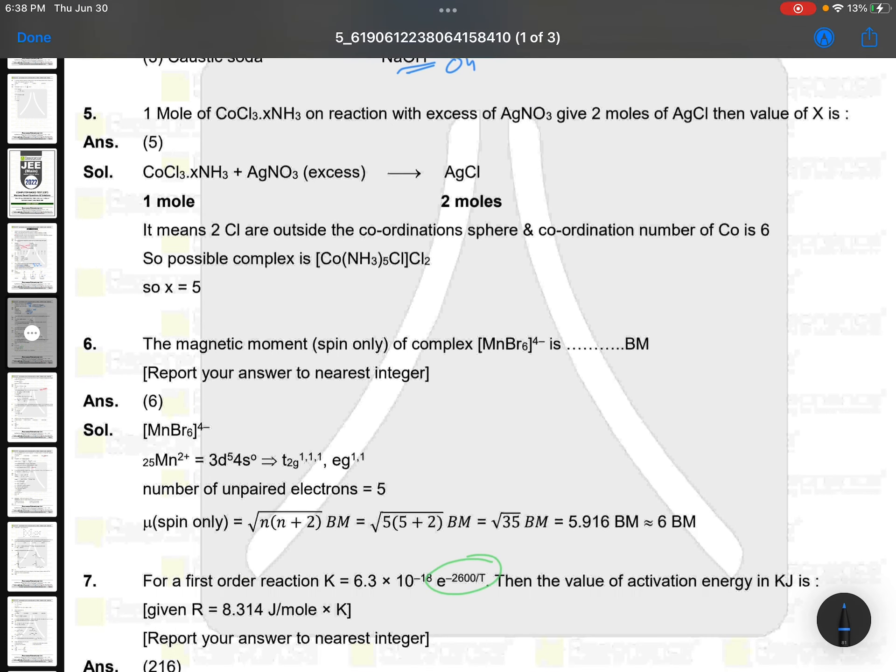One mole CoCl3 hexaammonia on reaction with excess AgNO3 gives two moles of AgCl. Two moles of AgCl means outside the square bracket there are two chlorides. The value of x is [Co(NH3)5Cl]Cl2. Why 5? Because cobalt coordination number is 6. Six are here, two chlorines are outside. Good question.